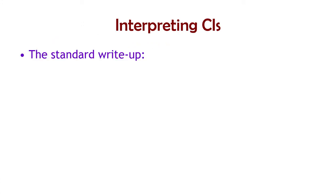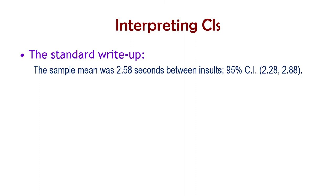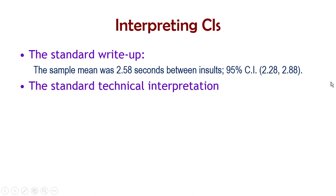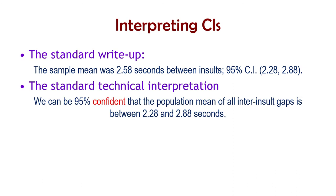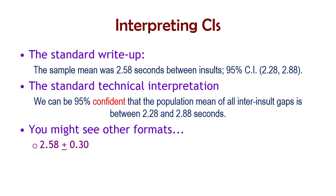The standard write-up is something like: the sample mean was 2.58 seconds between insults, 95% confidence interval, and then in parentheses the lower and upper limits. The standard technical interpretation uses the concept of confidence: we are 95% confident the population mean of all inter-insult gaps is between 2.28 and 2.88 seconds. Some fields will write the mean plus or minus the margin of error. Sometimes people use square brackets instead of curved brackets — those are not important.